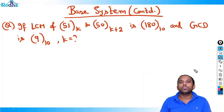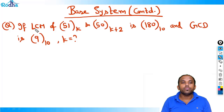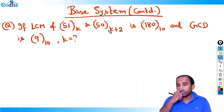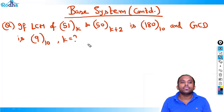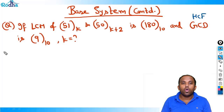Hi guys, let's continue with the base system. There's a question here: if LCM of 51 base K and 15 base K+2 is 180 in base 10, and GCD is 9 in base 10. GCD basically means HCF. What is the value of K?